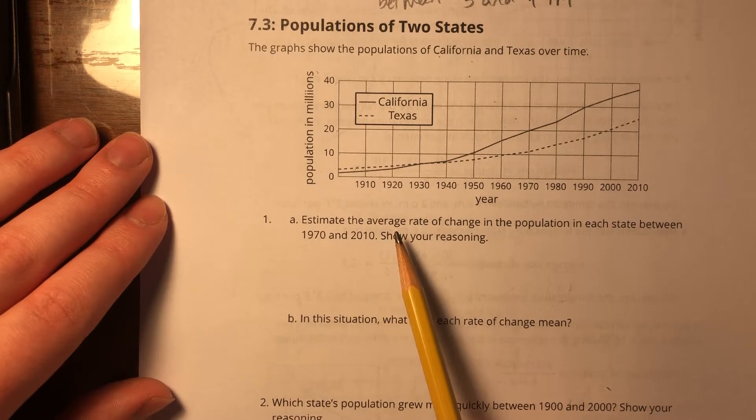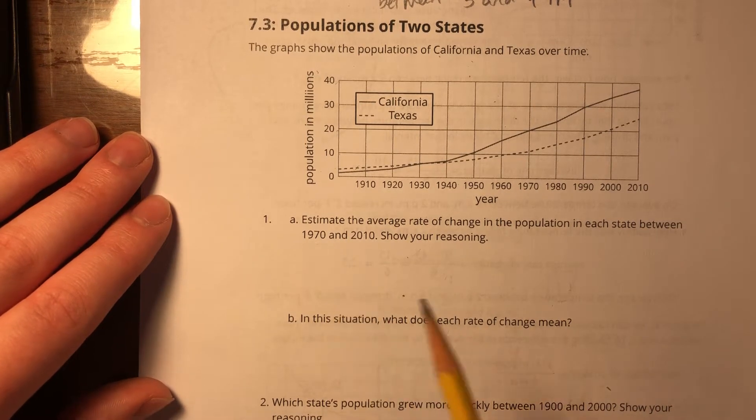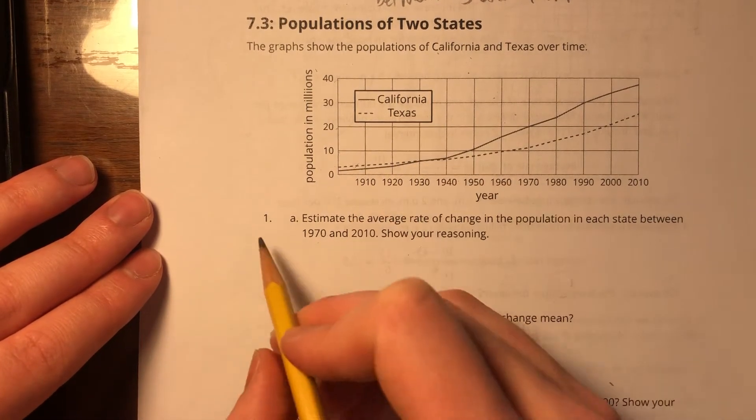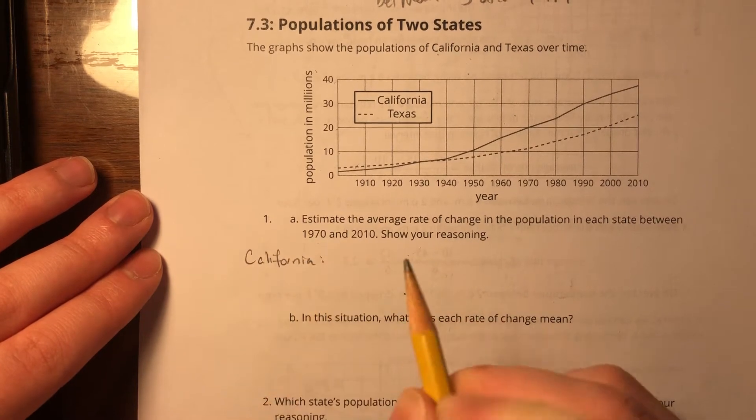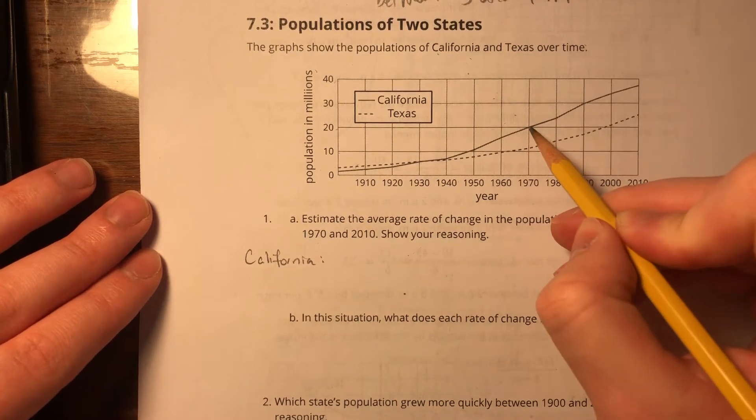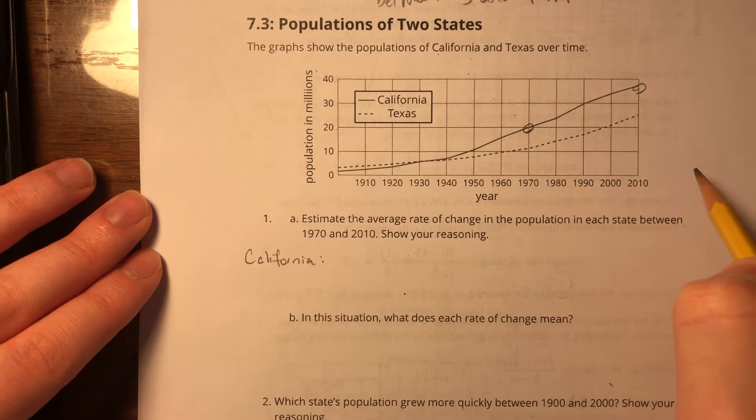First thing I'm going to do is locate points for 1970 for both states. Let's do Texas—actually, let's do California first. So California 1970, it's a solid line. Here's one point I need. And then 2010, here's the next point I need.